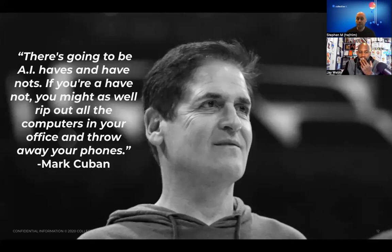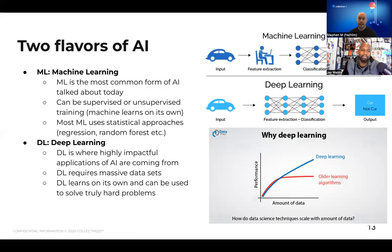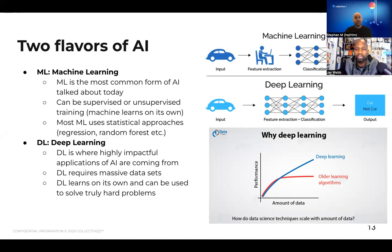Machine learning has been around for 30 plus years and nobody gave much thought to it. Most of this stuff is going to be so simple you'll understand why it doesn't work. There are two flavors of AI. AI is just a term generally used for something that replicates human thought. Simple calculators are a simple form of AI. But the two people talk about most are machine learning and deep learning.